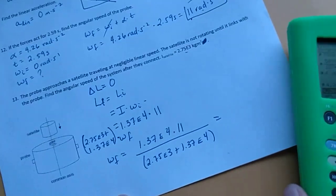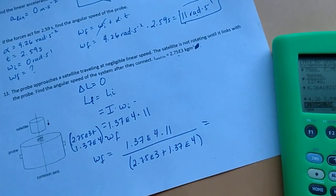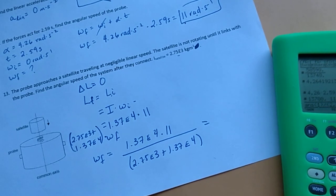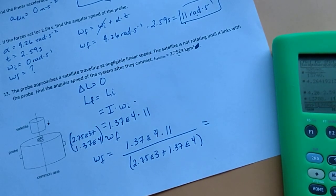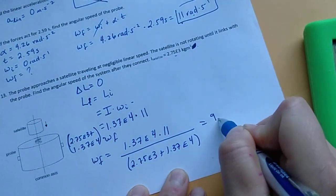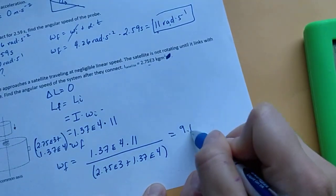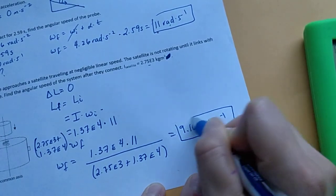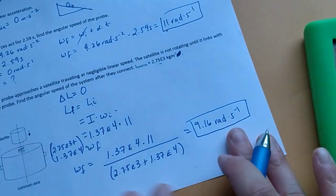So I get a final angular speed. Let me see, I'm calculating 1.37 E4 times 11 divided by 2.75 E3 plus 1.37 E4. And I get a final angular speed of, or angular velocity of 9.16 rads per second. And this is conservation of angular momentum.